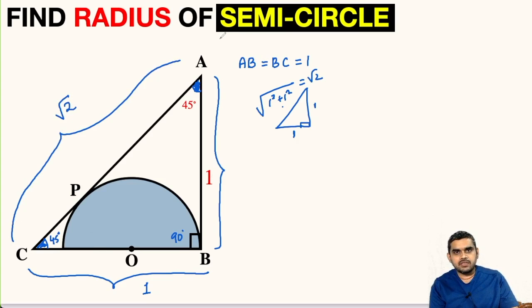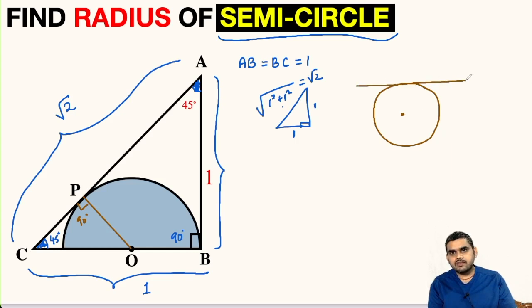Now our main aim is to find the radius of this semicircle. In order to do so, let us first join these two points. Now OP will be perpendicular to AC. Recall that we have a theorem in circles: if we have a circle and this is the center of the circle, and if this is a tangent and this is the point of contact, if we join these two points, the center of the circle and point of contact, then these two lines will be perpendicular to each other. So using that theorem, we get OP is perpendicular to AC.